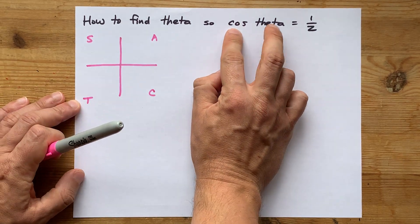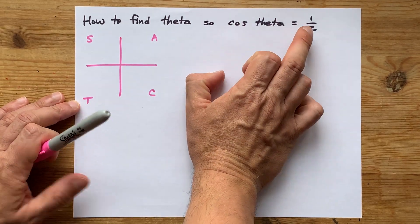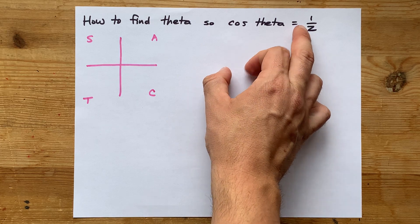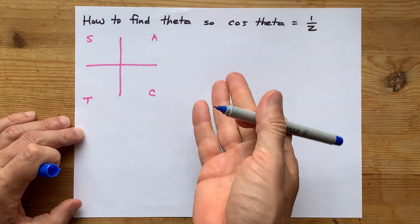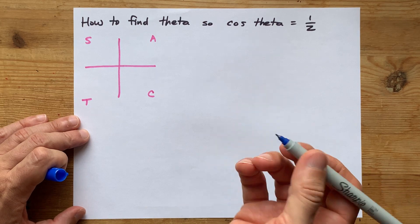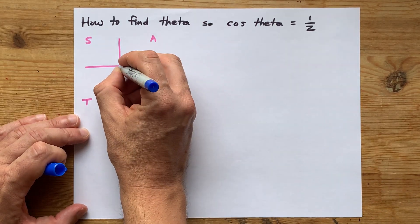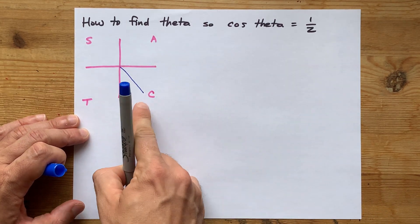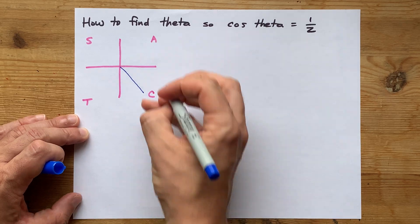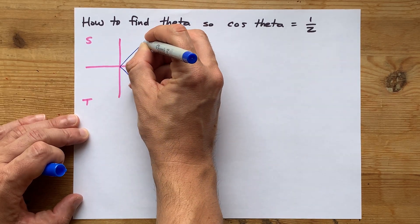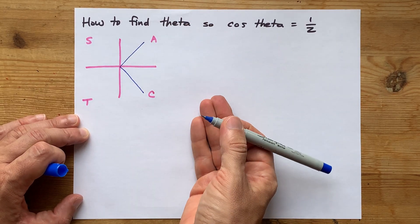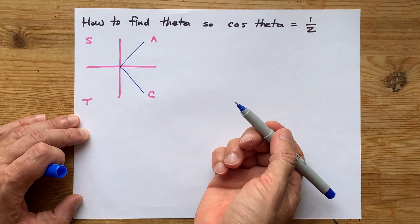Now, the cosine of whatever angle we're looking for here is positive. So I'm going to put my terminal arms in the place where cosine is positive, that's C for cosine, and the place where they're all positive, that's A for all. S is sine and T is tan.